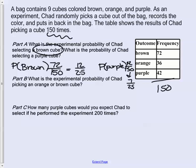So when we simplify 72 out of 150, we get 12 over 25. Probability of purple would have been 42 out of 150 or 7 out of 25.